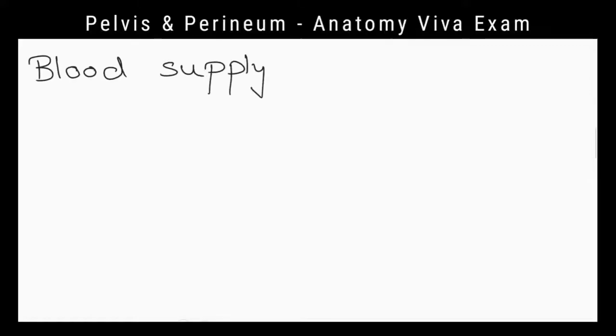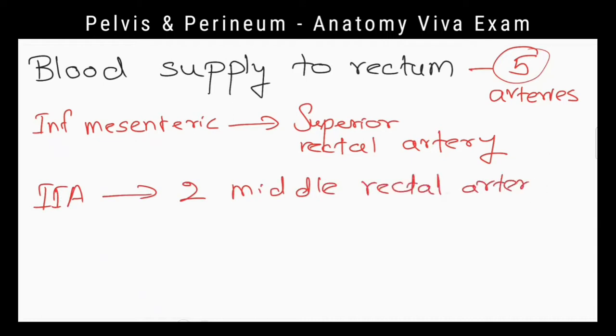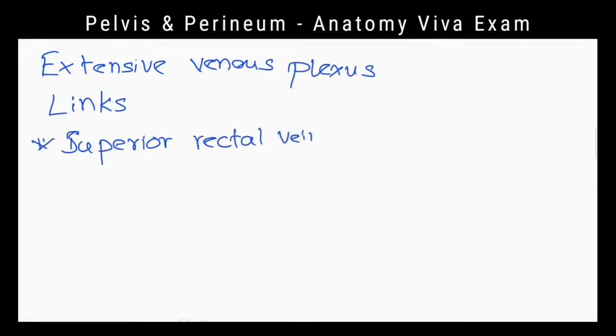Tell me about the blood supply of rectum. There are five arteries which anastomose with each other to supply rectum: superior rectal artery, two middle rectal arteries, and two inferior rectal arteries. There is an extensive plexus of veins which links superior rectal vein which drains into inferior mesenteric vein, middle rectal vein which drains into internal iliac vein, and inferior rectal vein which drains into internal pudendal vein.